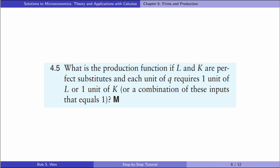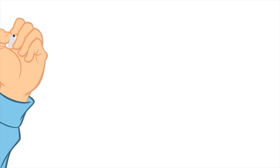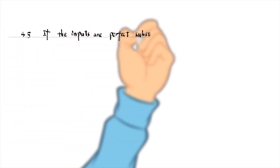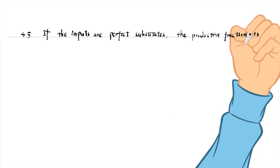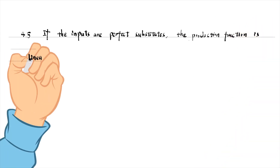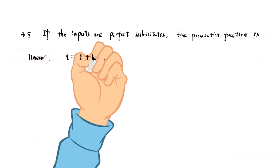Let's go to exercise 4.5. What is the production function if L and K are perfect substitutes, and each unit of Q requires one unit of L or one unit of K, or a combination of these inputs that equals 1? If the inputs are perfect substitutes, the production function is linear: Q = L + K.